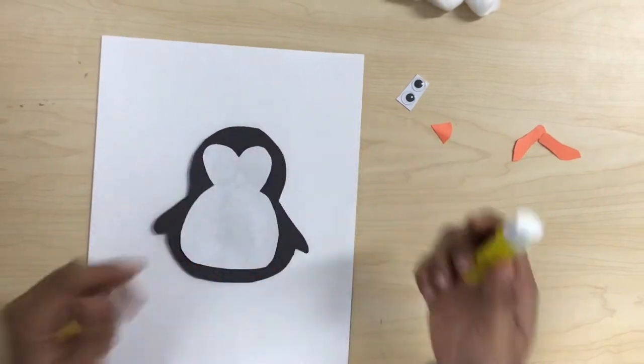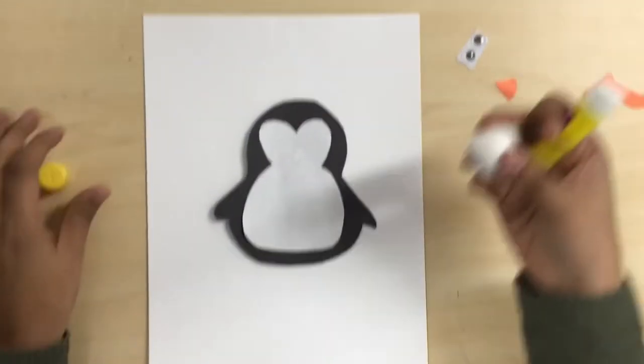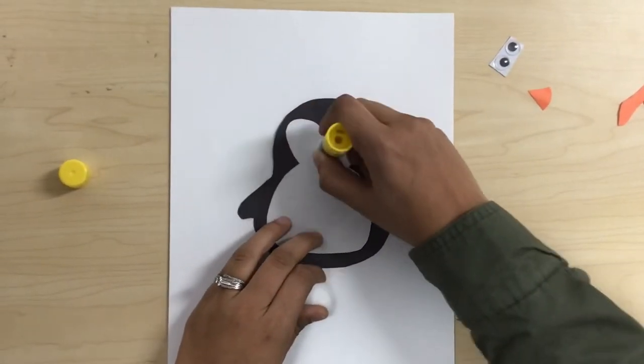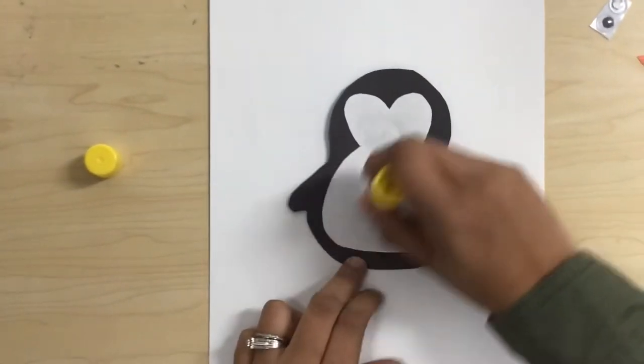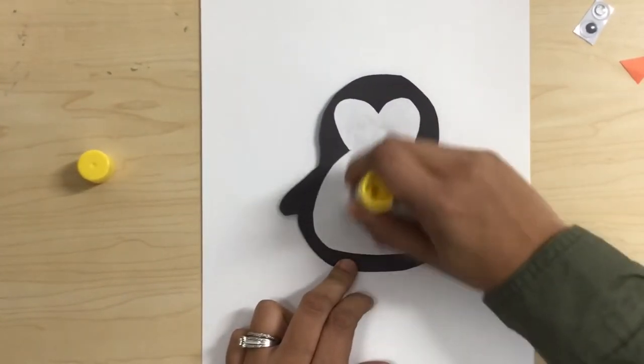After we glue it, we are going to get the cotton balls and we're going to glue them on the white part of the construction paper.